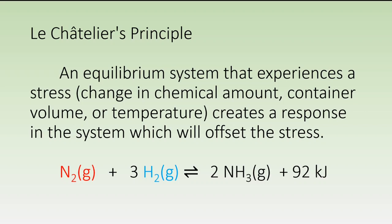For all of the examples, we're going to be looking at the equilibrium listed at the bottom, which is an exothermic reaction causing nitrogen and hydrogen to react together, producing ammonia. We know that it's exothermic for the fact that energy is a term on the product side.